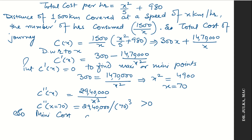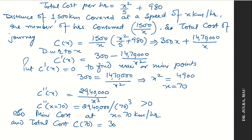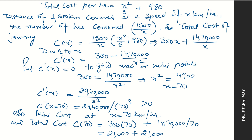Since the second derivative is positive at X = 70, we have a minimum. The most economical speed is 70 km per hour. The minimum total cost at X = 70 is: 300 × 70 + 14,70,000 / 70 = 21,000 + 21,000 = rupees 42,000.